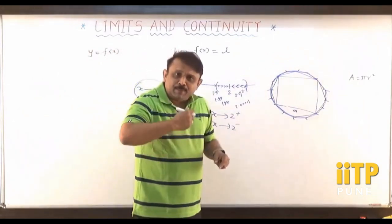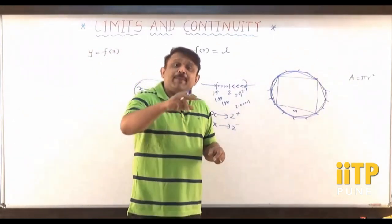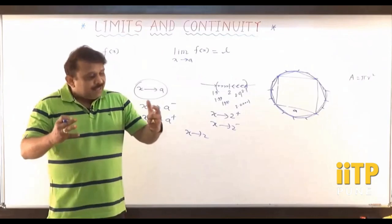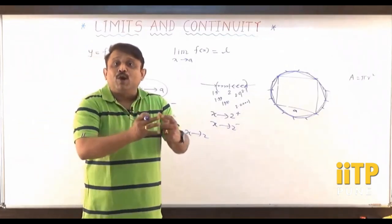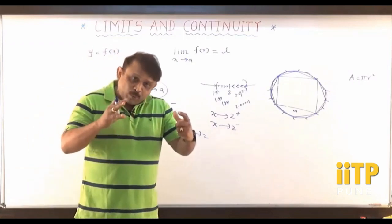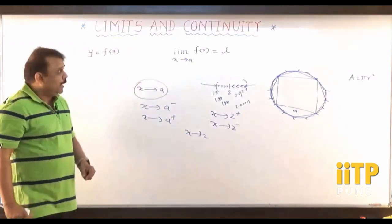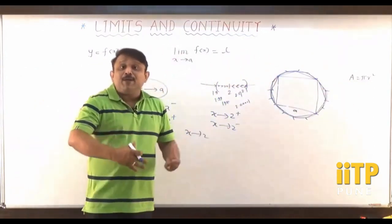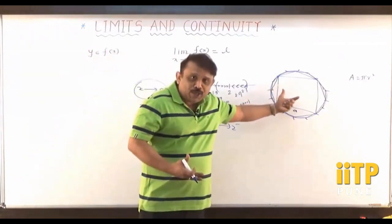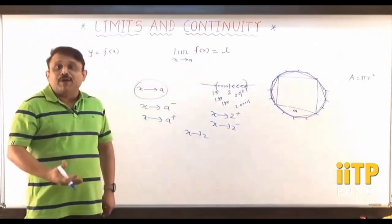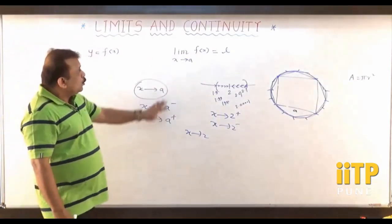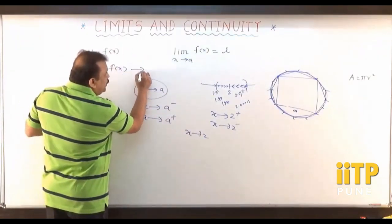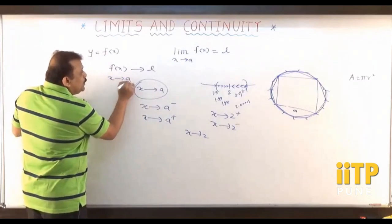As we increase the number of sides of the polygon inscribed in the circle, the area of the polygon is expanding and going very close to the area of the circle — approximating the area of the circle. So we may say that A equal to pi r squared could be the limit of the area of this polygon whenever the number of sides of that polygon increases indefinitely. So limit of f of x as x tends to a means f of x is approaching the number l whenever x is approaching the number a.